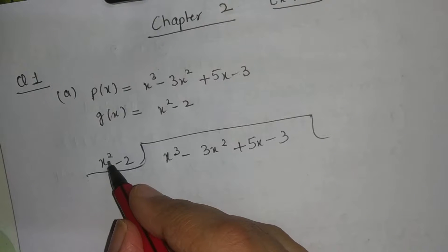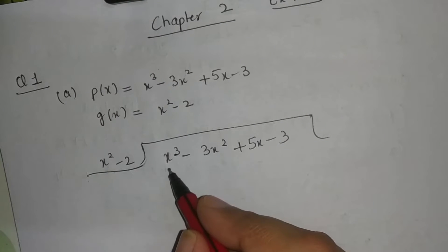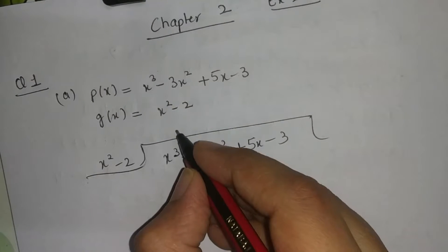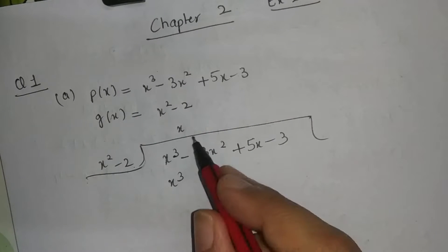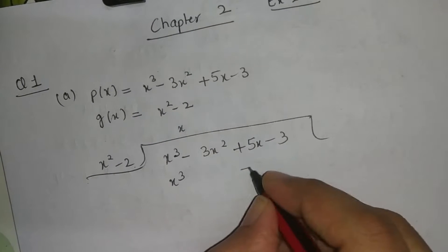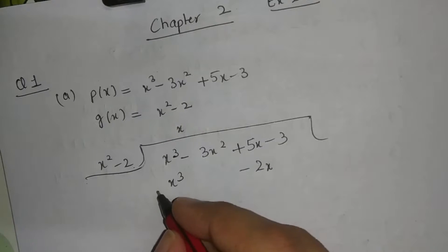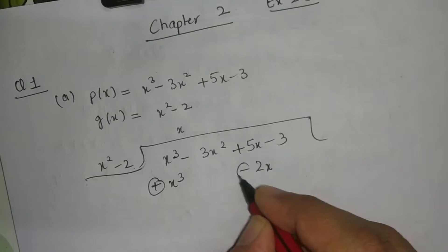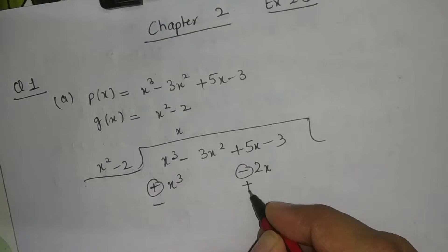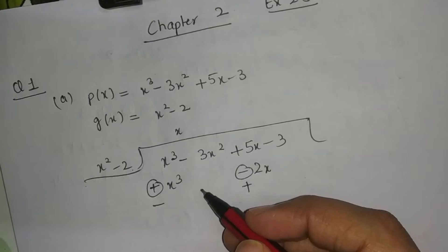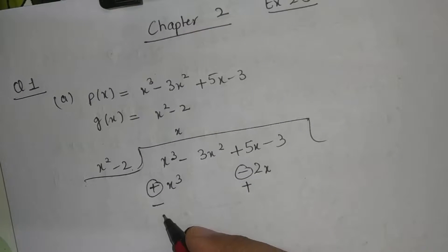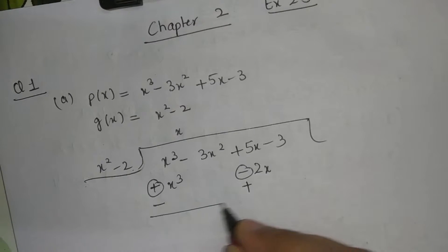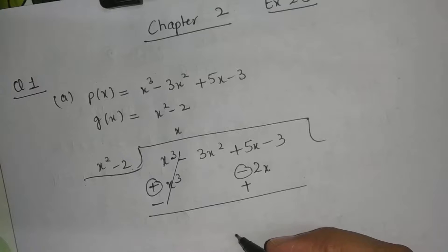We have x raised to the power 2 and we need x raised to the power 3, which means we will multiply it by x. So x cubed will go, and minus 2 into x gives minus 2x. After that, our first step is to change the sign. When we subtract in algebra, we change the sign, so we change the sign so that plus and minus will cancel.